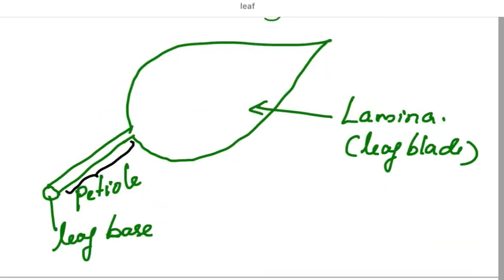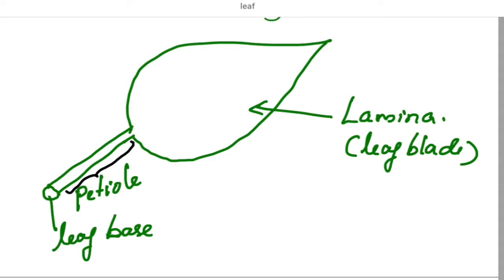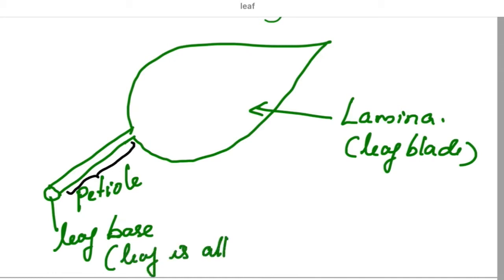There are three parts for a typical leaf: leaf base, petiole, and lamina. Lamina is also called the leaf blade. The leaf is attached to the stem by the leaf base.